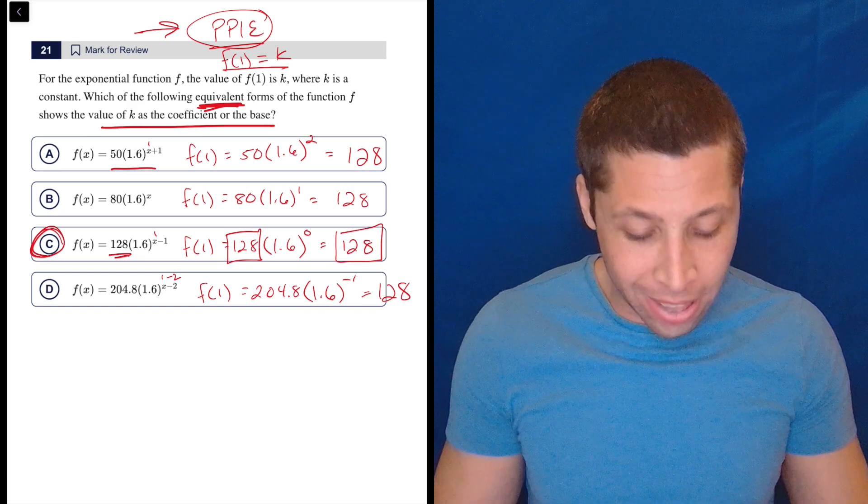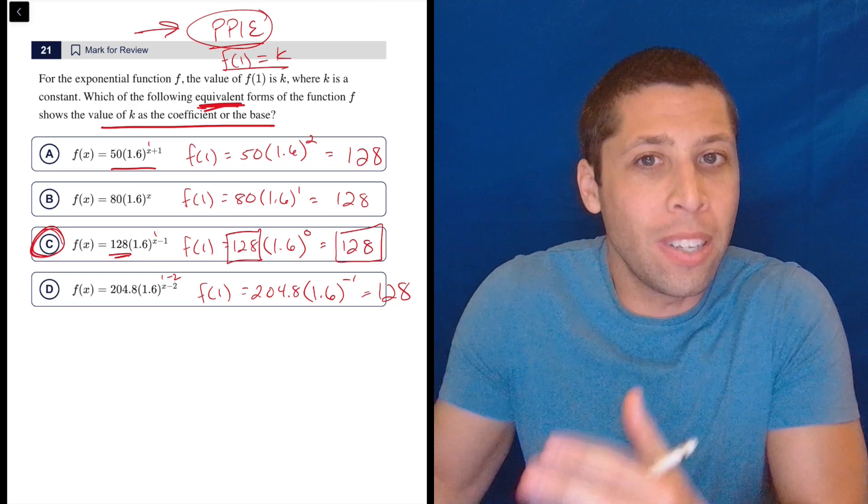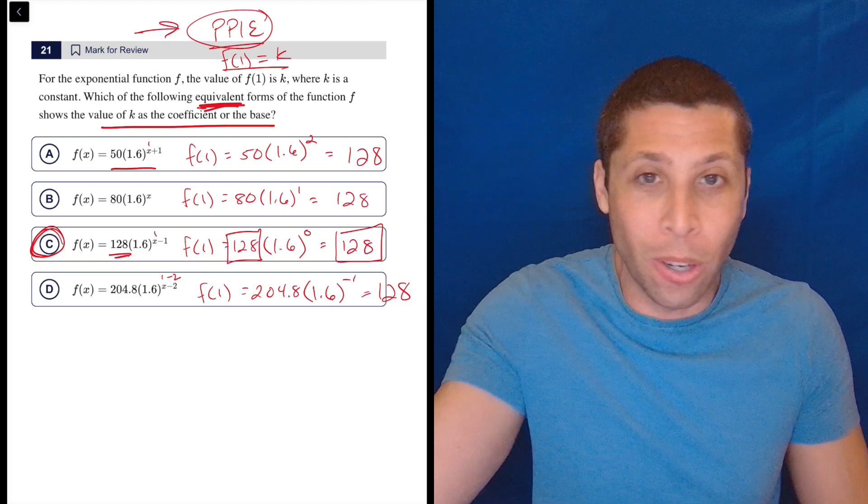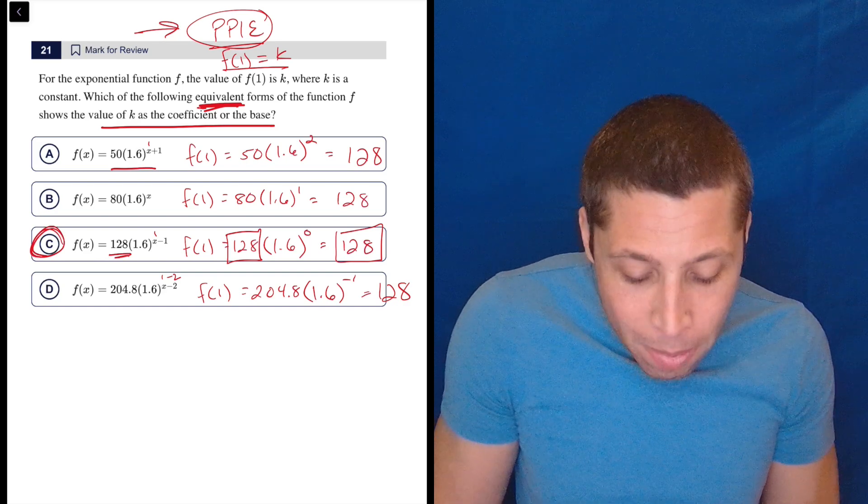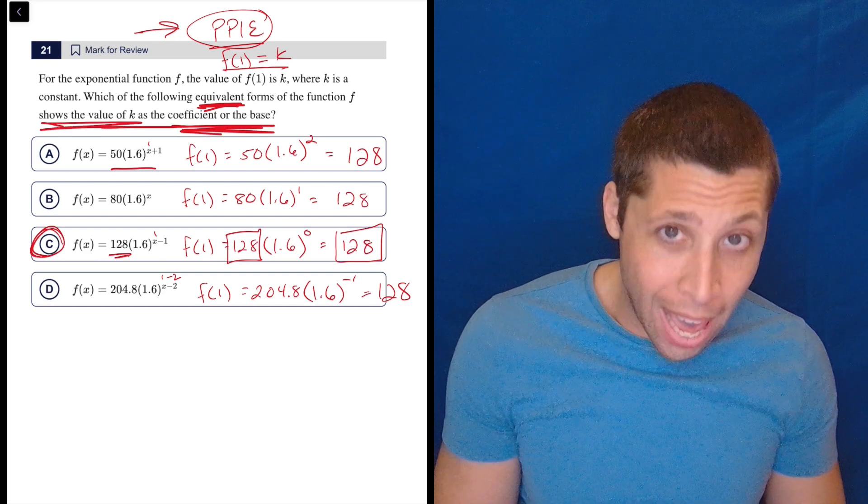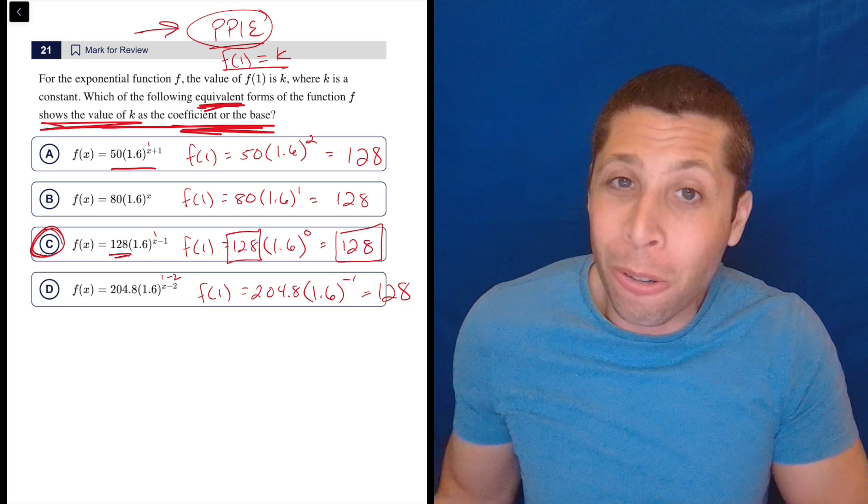I bet that's the answer. That's right. It's basic like Sesame Street logic here. One of these things is not like the others. Like let's play a game. And that one has the 128 you're looking for. And, you know, maybe coefficient or base are scary words, but shows the value of K isn't. We found K is 128. It shows up in that equation.